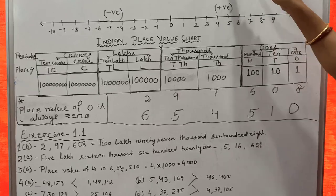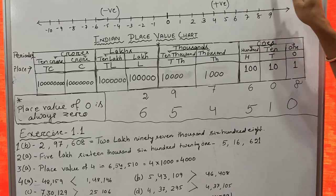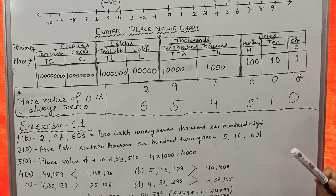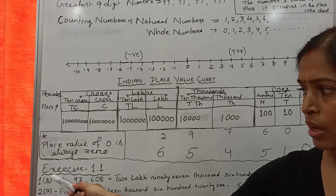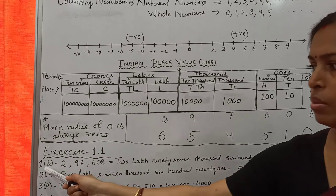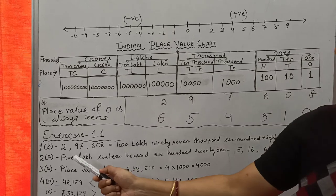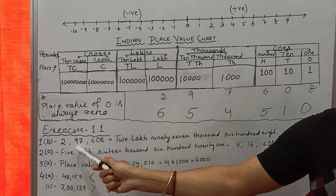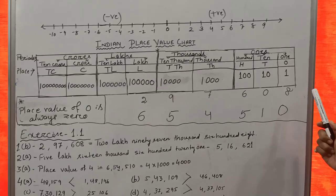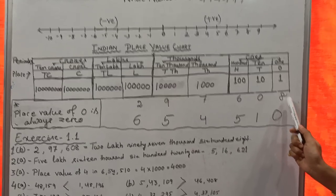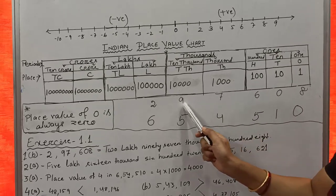What is Place Value? The place value of a digit is the number multiplied by the value of the place it occupies in the Place Value Chart. Let us take one example, given in your book, Exercise 1.1, Question No. 1B. The number given is 2,97,608. To write this number in the Place Value Chart, start from the extreme right: first 8, then 0, then 6, then 7, then 9, and 2.